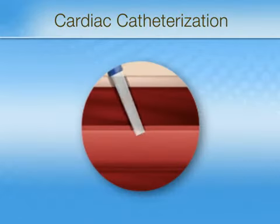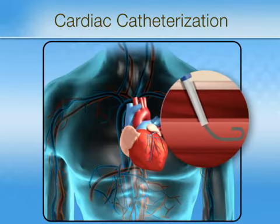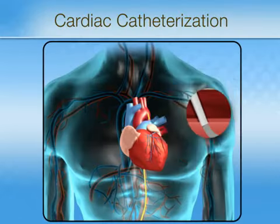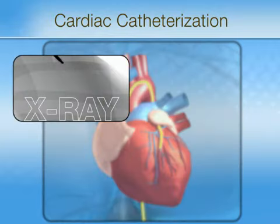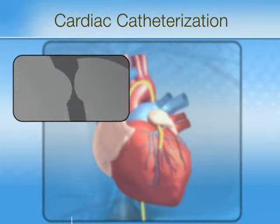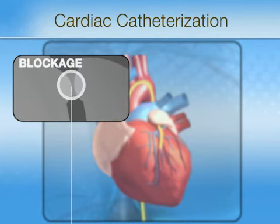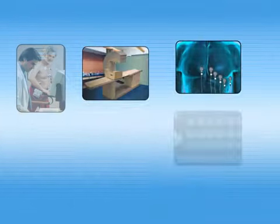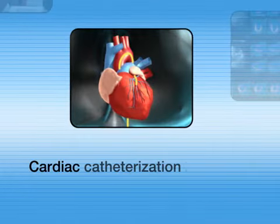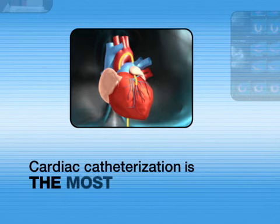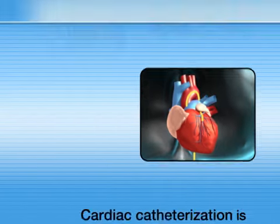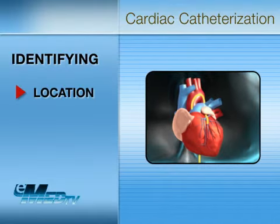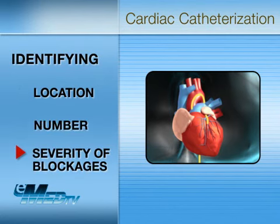Cardiac catheterization is another procedure that lets the doctor see inside the heart with a special dye. This helps find any problems inside the heart and inside the arteries. At this time, cardiac catheterization is the most accurate test for looking at your coronary arteries and identifying the location, number, and severity of blockages that are affecting your heart muscle.